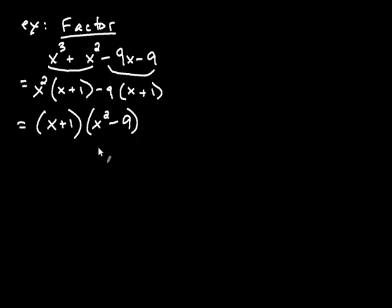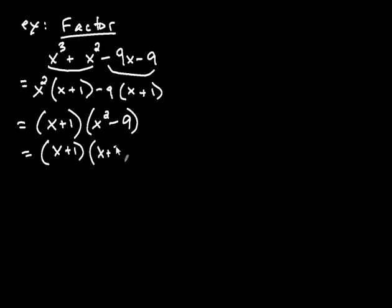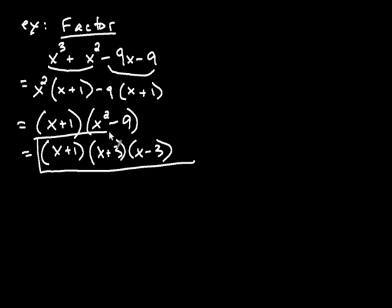You might think we're finished, but notice that x squared minus nine is a difference of squares. That factors as x plus three times x minus three. So the x plus one remains as it is, and x squared minus nine becomes x plus three times x minus three — that's our answer. Notice we actually used two factoring strategies: factoring by grouping, and then the difference of squares. That's how it goes with more complicated polynomials — you often use multiple techniques on the same problem.